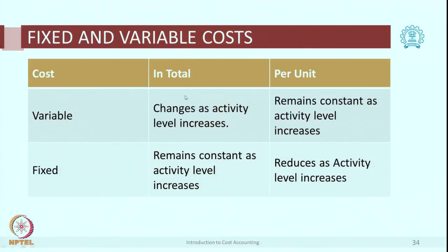Variable cost in total changes with the level of activity. If you calculate on a per-unit basis, they remain constant per unit. As far as fixed costs are concerned, they are constant in total. But on a per-unit basis, they go on reducing for every extra unit, because they are common in total and spread over more units.